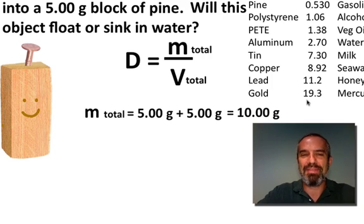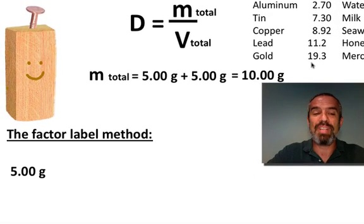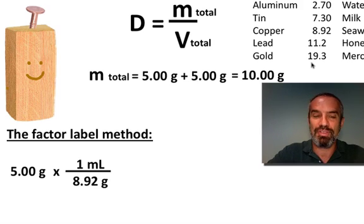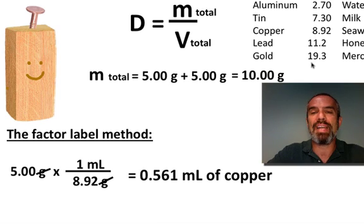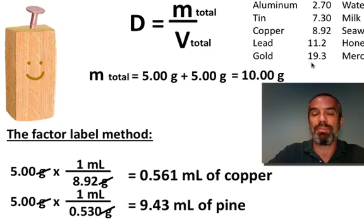But what about the volume? We're not given the volume, so we can figure them out given the equation. So, using the factor label method, 5 grams of copper, and there's the density of copper turned upside down so we can get a volume, has a volume of just 0.561 milliliters. 5 grams of pine, there's the density of pine, has obviously a much larger volume, 9.43 milliliters. But you can tell that from the picture.